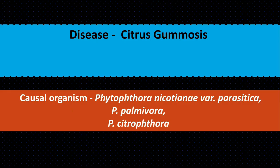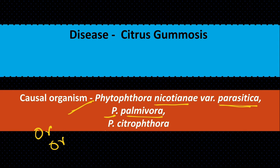Citrus gummosis is caused by a fungus. Three pathogens are responsible: Phytophthora nicosiana variety parasitica, Phytophthora palmevora, and Phytophthora citrophthora. So this disease involves three pathogens.